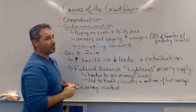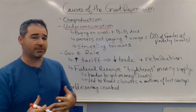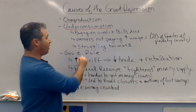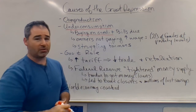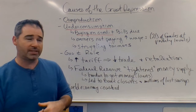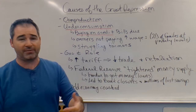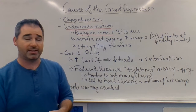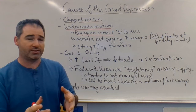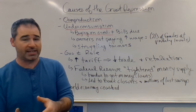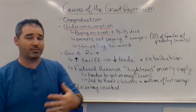Underconsumption means people weren't buying enough. Why weren't people buying enough? You have to look back at the 1920s — all that buying on credit in the early '20s. Now people are seeing that the bills are coming due and they don't have enough savings to keep purchasing things. They had bought too much early on, and towards the end of the decade they had stopped buying things.